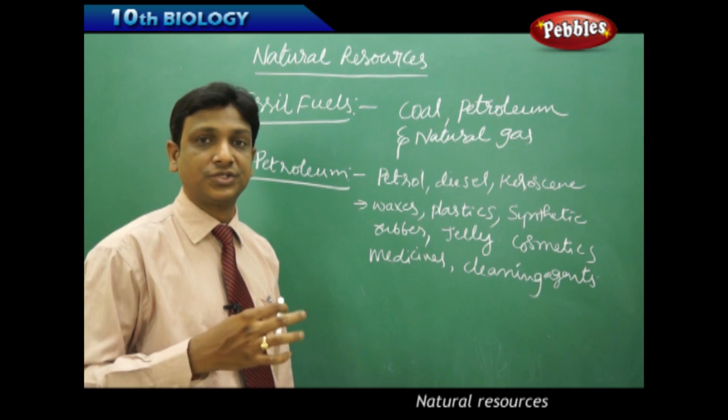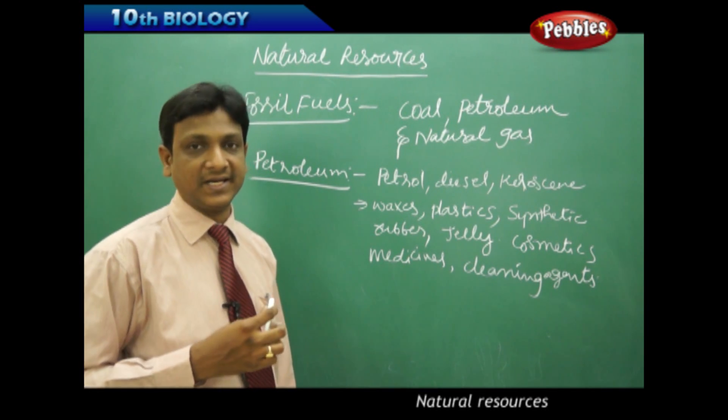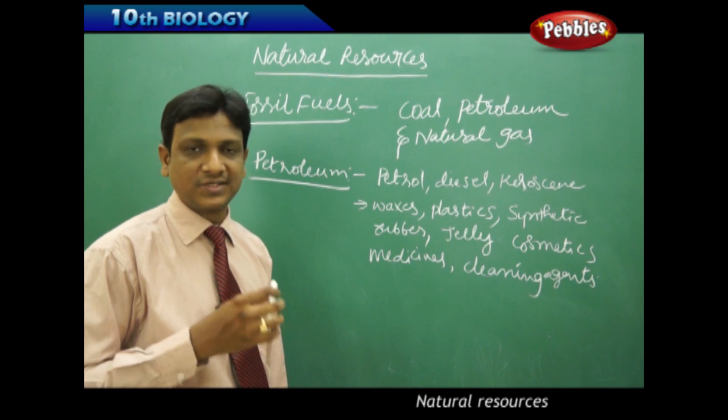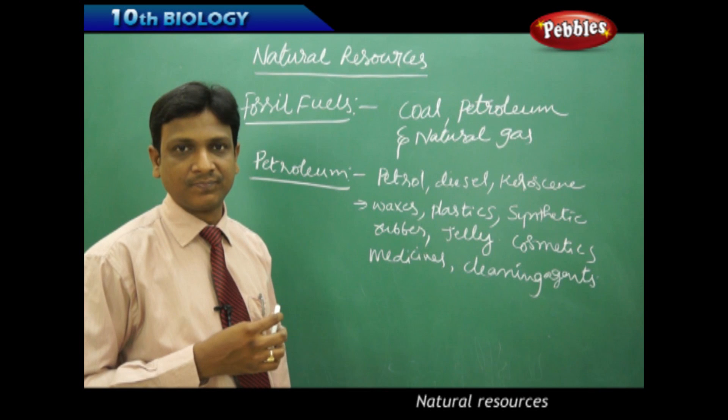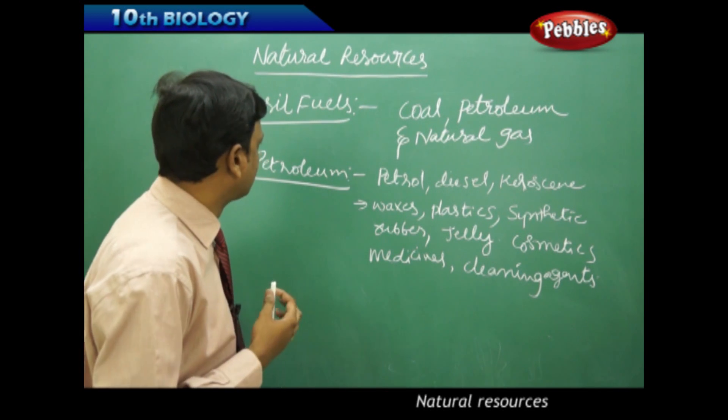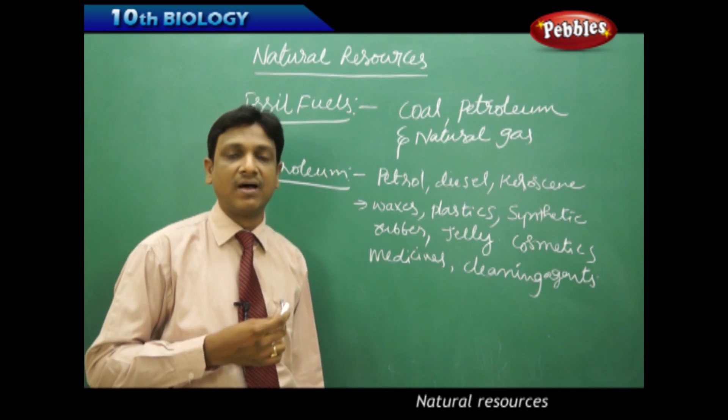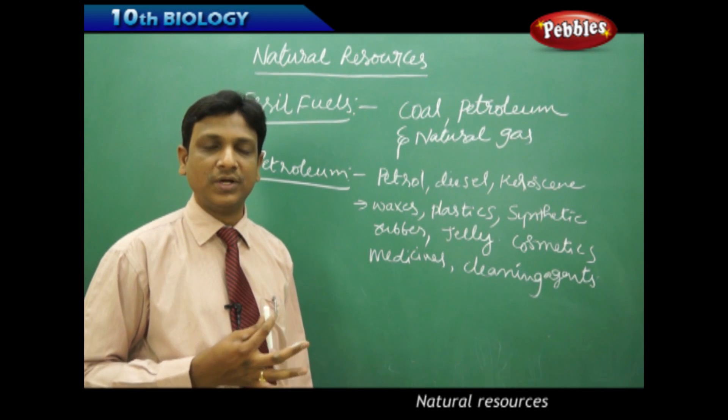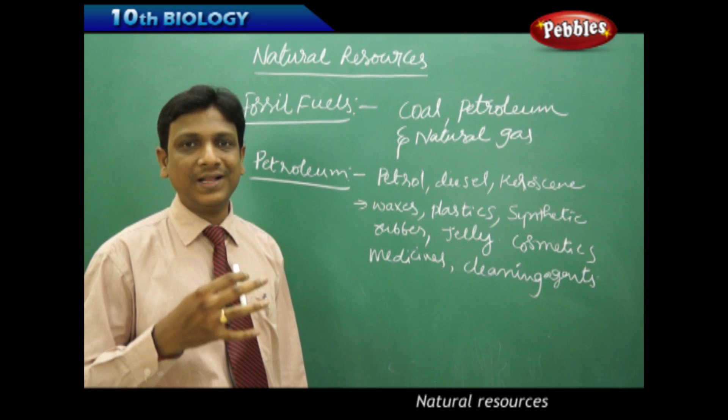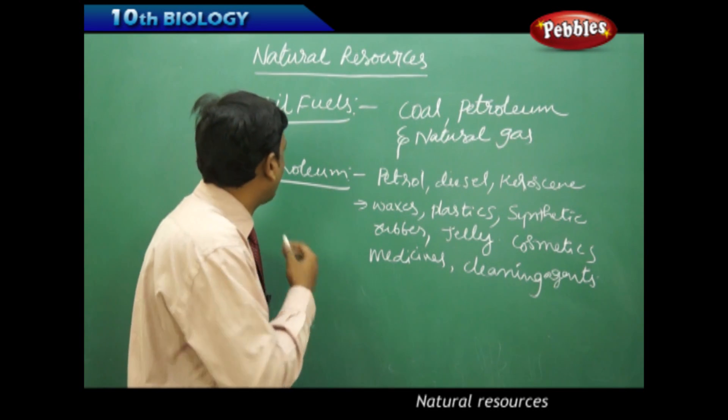Coal is used in thermal power stations to produce electrical energy, and the products of coal are also used in making many products. Even from the fossil fuel remnants, tar is made which is used to lay roads, along with waxes, shoe polish, and many kinds of things. All these are produced from fossil fuels.